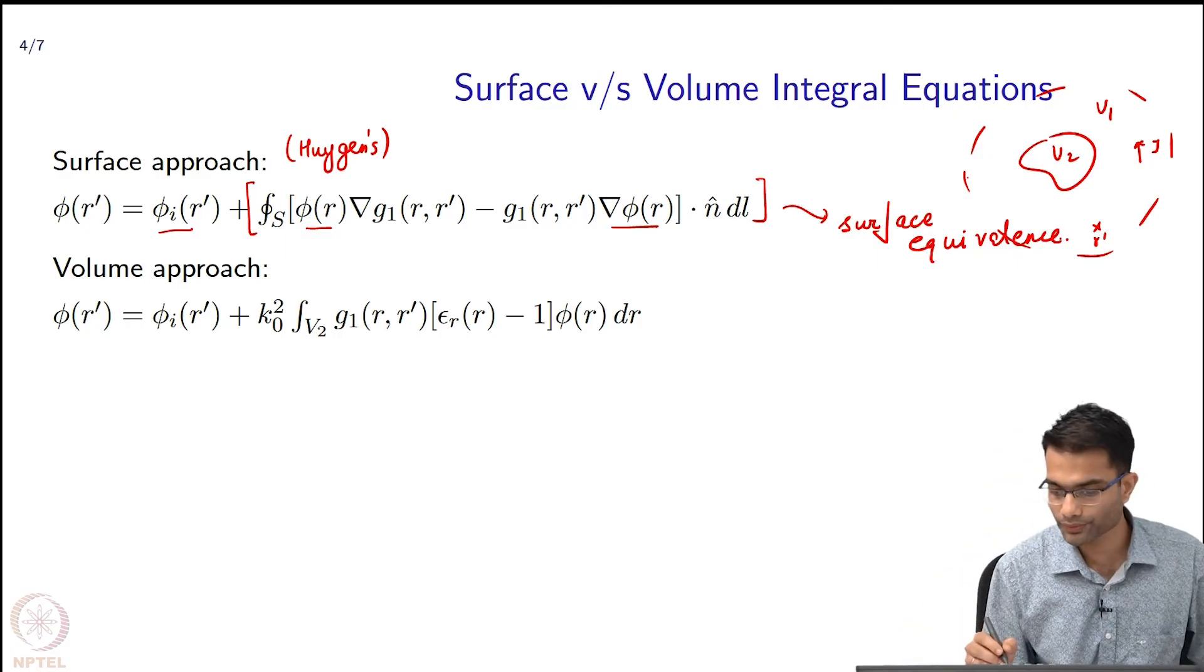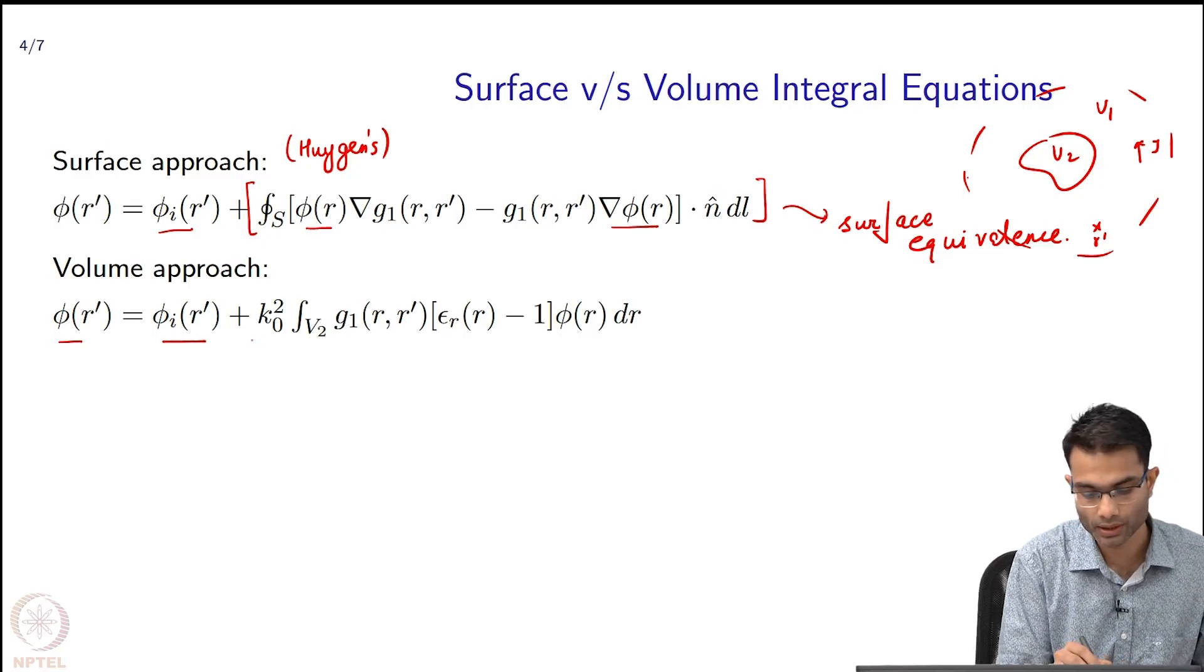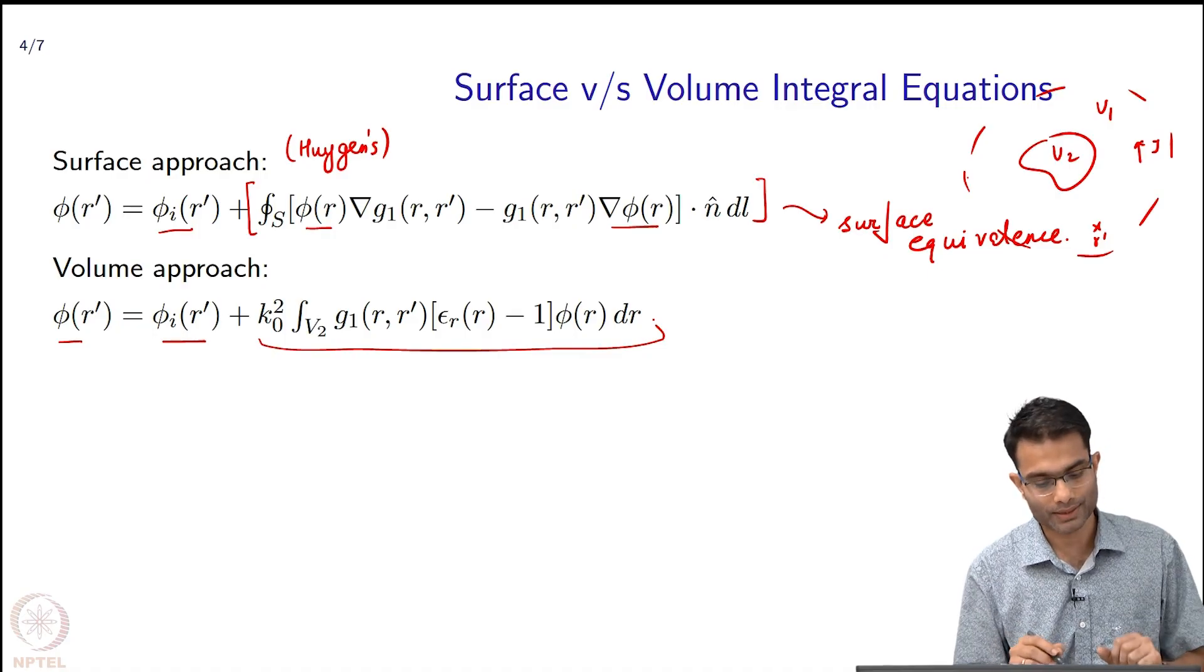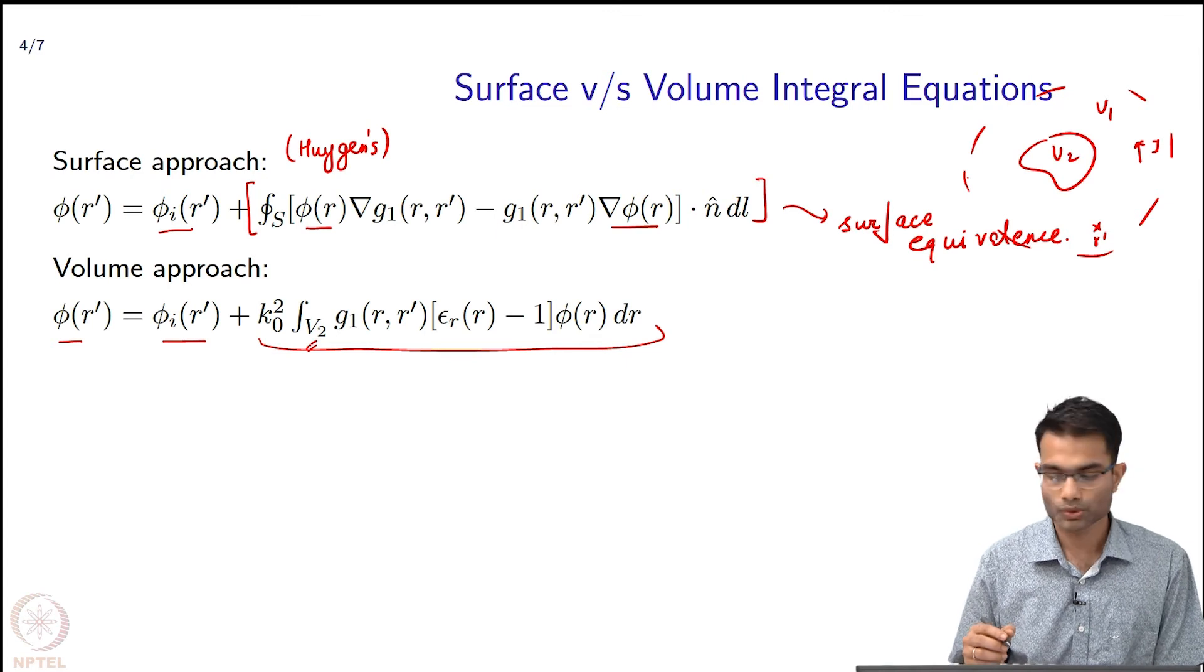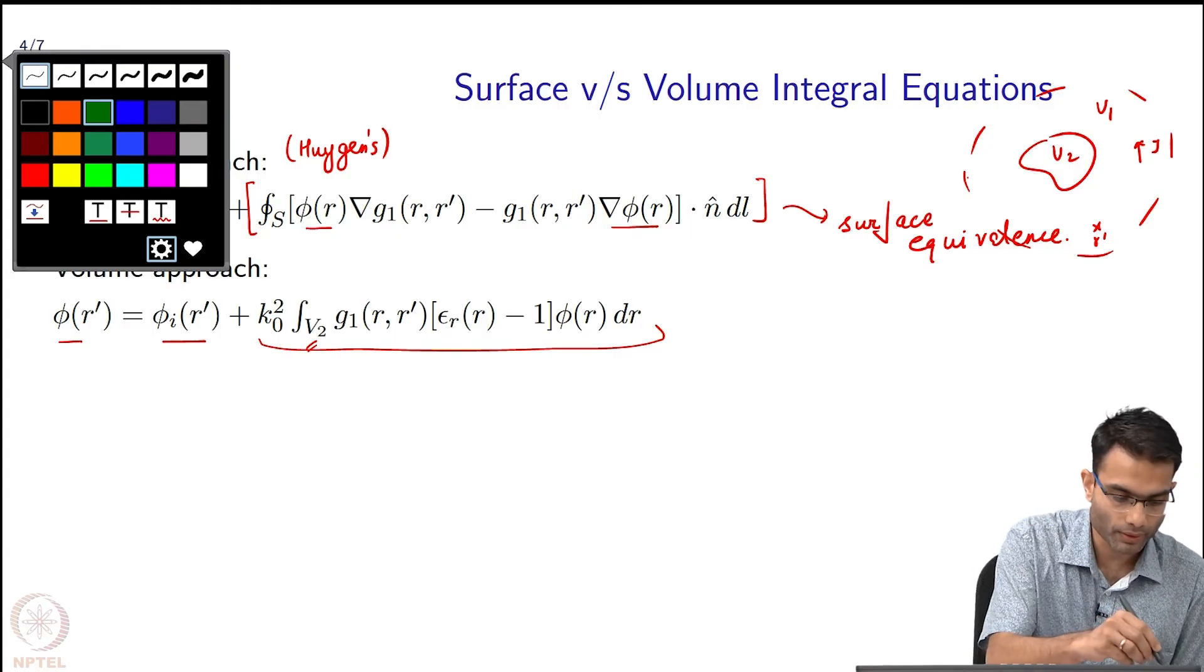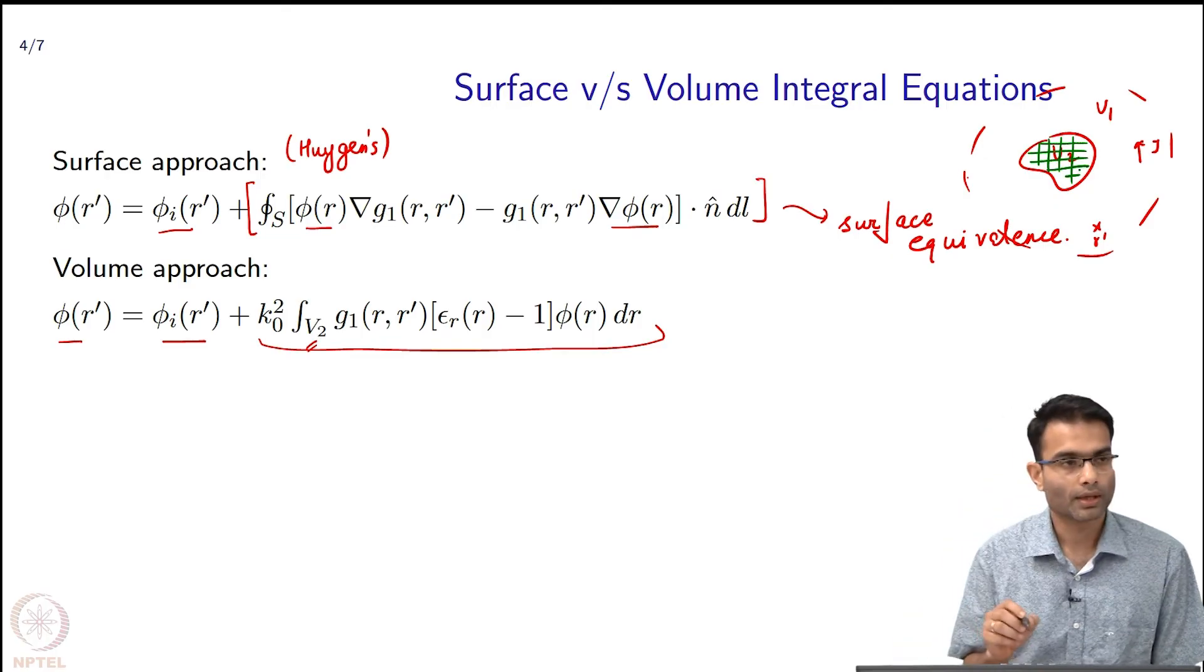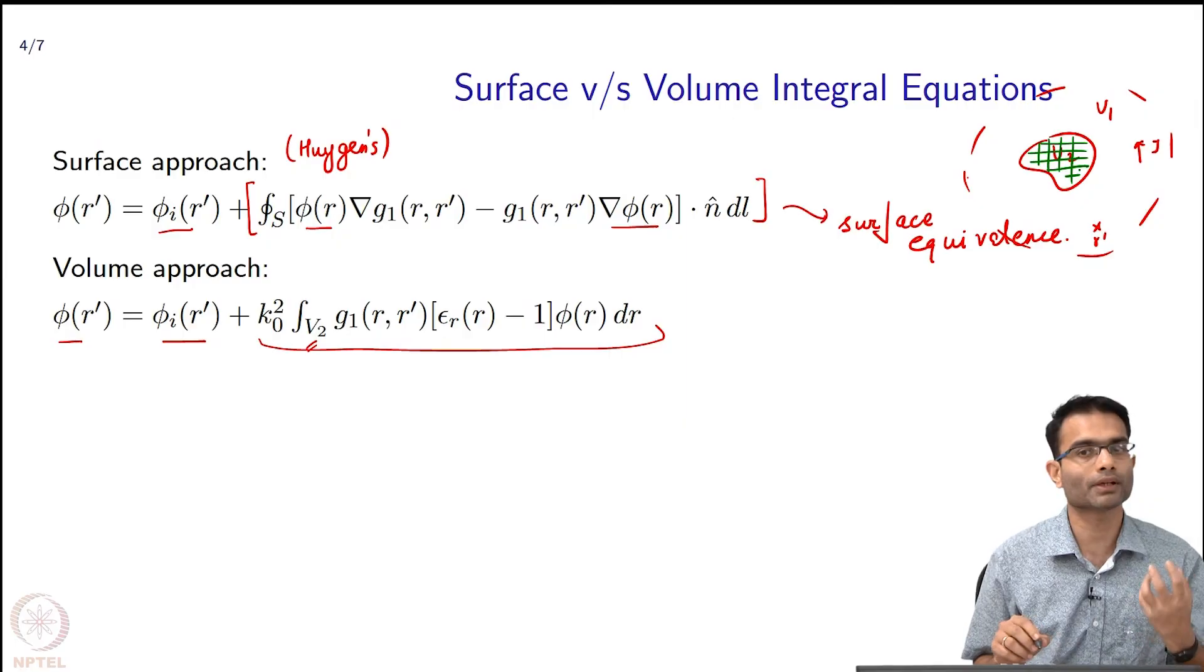And in the case of the volume integral equation, again I have the field at some point as incident field plus scattered field. Now, this integral is over V2 - that means I am going into the object. What have I done to the object? I have replaced this object by a grid of this sort and at each grid point I have an equivalent current.